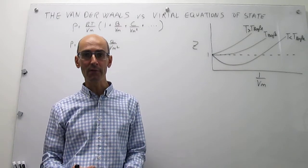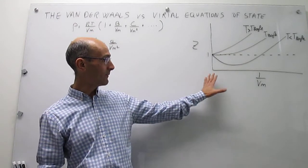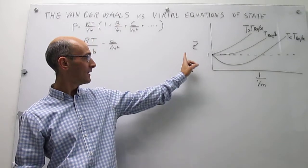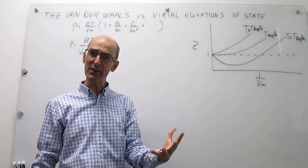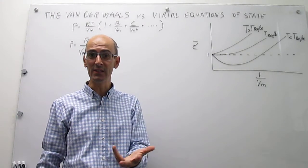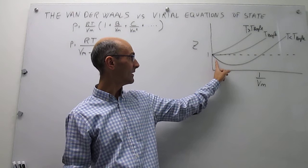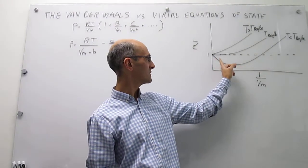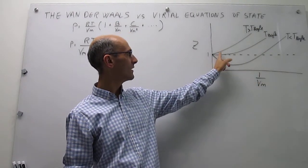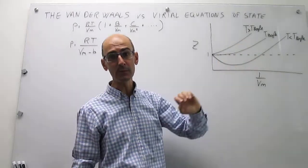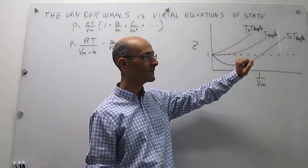When we examine how the compression factor changes with pressure or inverse molar volume for many gases, the behavior is showcased in this graph — the compression factor as a function of the inverse of the molar volume. In general, there are three regimes: one where attractions dominate and the compression factor is lower than one but eventually turns over, another where repulsions dominate throughout, and an intermediate case.